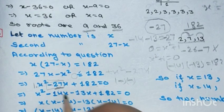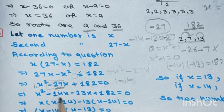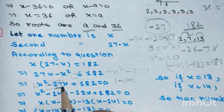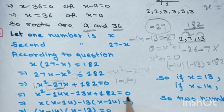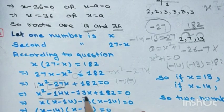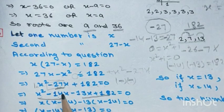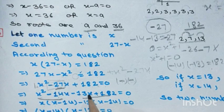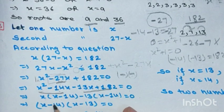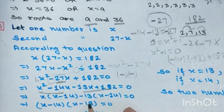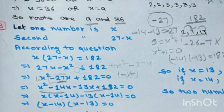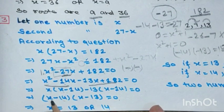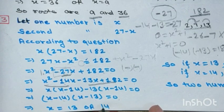Since both factors are negative: x² - 14x - 13x + 182 = 0. From first two terms, take x common: x(x - 14). From last two terms, take -13 common: -13(x - 14). Factor (x - 14) is common: (x - 14)(x - 13) = 0. Setting each to zero: x = 14 or x = 13.